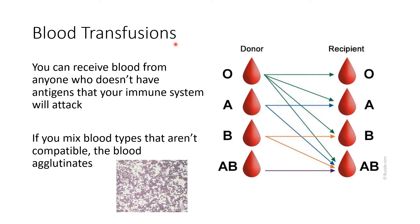Blood type is really important when talking about blood transfusions, because if you mix two blood types that are incompatible — if you mix blood that has one type of antigen with the antibody for that same antigen — the blood undergoes agglutination, where the antibodies attach to the antigens on the surface of the red blood cell and the blood clumps up. That's dangerous because it's like a bunch of little clots forming throughout your body, and it can kill you.